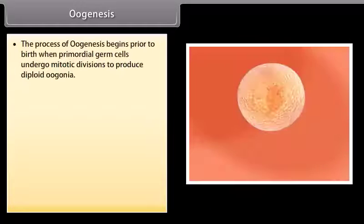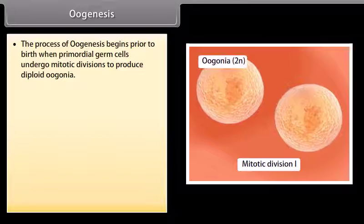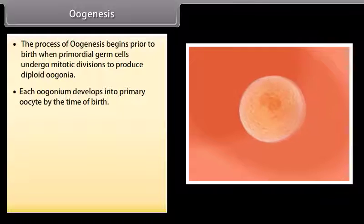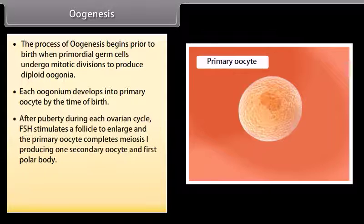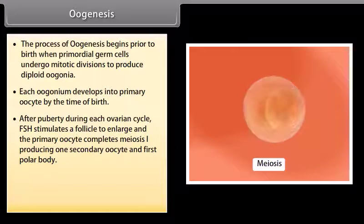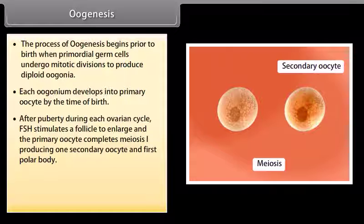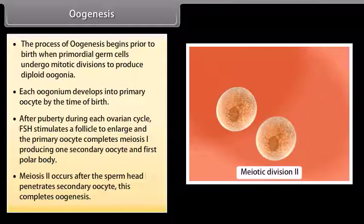The process of oogenesis begins prior to birth when primordial germ cells undergo mitotic divisions to produce diploid oogonia. Each oogonium develops into a primary oocyte by the time of birth. After puberty, during each ovarian cycle, FSH stimulates a follicle to enlarge and the primary oocyte completes meiosis I, producing one secondary oocyte and first polar body. Meiosis II occurs after the sperm head penetrates the secondary oocyte. This completes oogenesis.